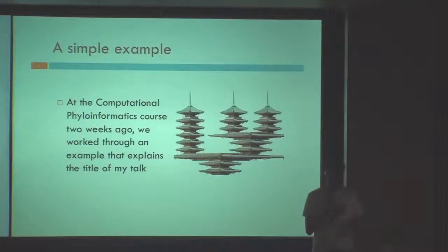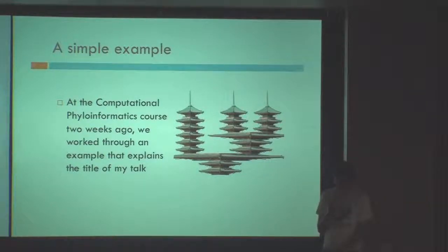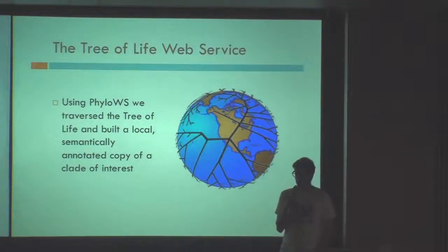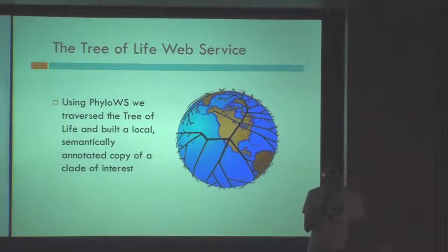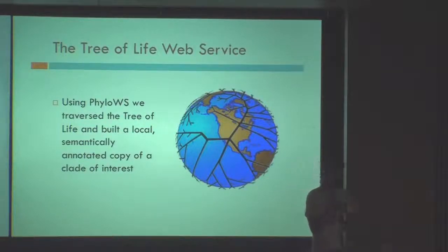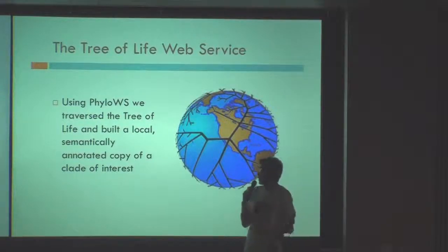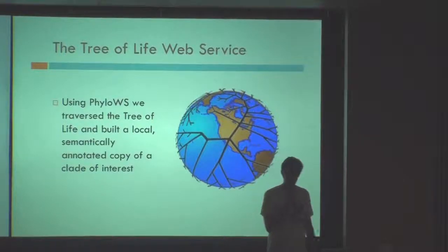One of the problem sets was to build a large phylogeny and then do interesting things with it. What we did is we started out with the Tree of Life web project, located at tollweb.org. It's a curated backbone of the Tree of Life, where experts contribute to give the consensus opinion of the systematics of their group. This project also has a service interface accessible through the FindAnotherUS URL API.